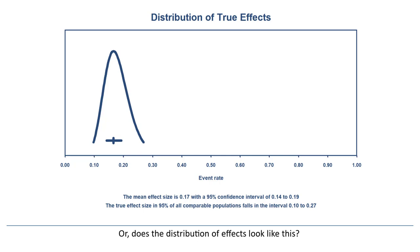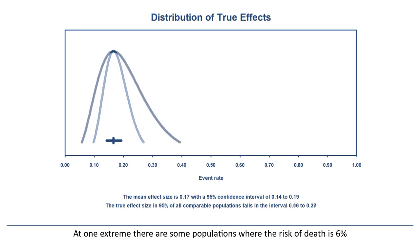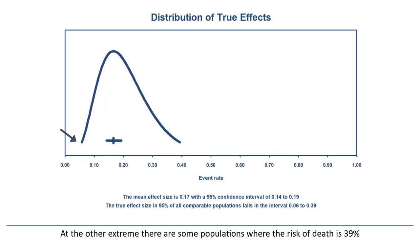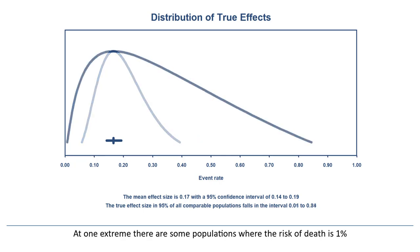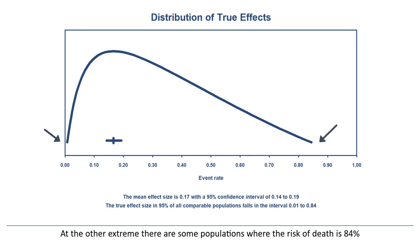Or, does the distribution of effects look like this? At one extreme, there are some populations where the risk of death is 6%, and at the other extreme, there are some populations where the risk of death is 39%. In this case, the prediction interval is 0.06 to 0.39. Or, does the distribution look like this? At one extreme, the risk of death is 1%, and at the other extreme, 84%.